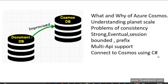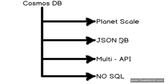Before I start, let me tell you that Cosmos DB is an improvised version of DocumentDB. In 2014 we had something called DocumentDB, and Cosmos DB is an improvised version of it. Let us first define what Cosmos DB is. Cosmos DB is a Planet Scale NoSQL JSON Database with Multi-API support. The word 'Cosmos' means Universe — or more specifically, a well-ordered universe — something big, and that is what Cosmos DB intends to do: give you a Planet Scale Database.